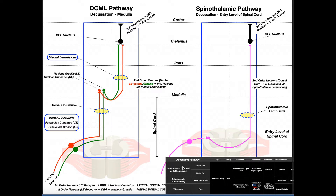There are three major ascending pathways. The first one, which is this video, is the DCML pathway. The next video covers the spinal thalamic pathway, and after that the trigeminal pathway. Before getting into the details of the DCML, I want to go over some basics. These ascending pathways are set up in a system of three neurons: a first-order neuron, a second-order neuron, and a third-order neuron.